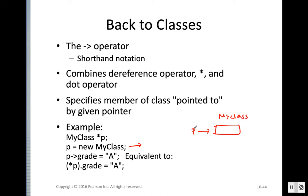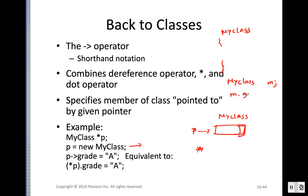Pointer p is pointing to this MyClass object, which means using pointer p we can access this object. We can access the object that the pointer is pointing to using the dereference operator. If we have a regular variable of MyClass, m, we can access a member function using the dot operator — m.getData().